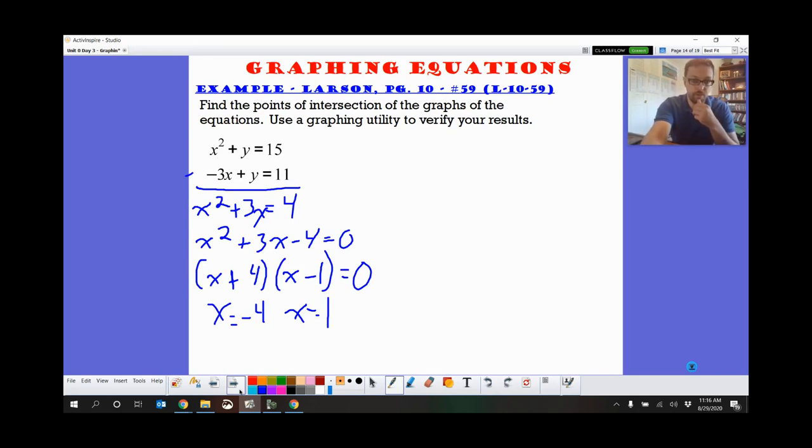So I'll plug in that x. So negative 3 times negative 4 plus y equals 11. So that's 12 plus y equals 11. Subtract 12, so y equals negative 1. So our first answer, negative 4, negative 1. Hey, cool. That's what we got on Desmos.